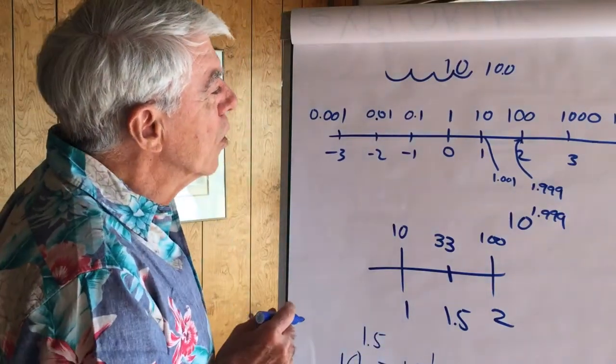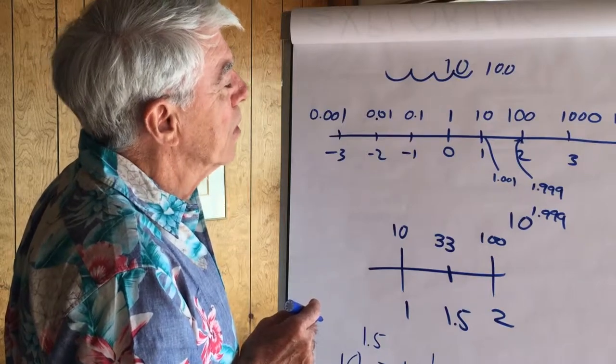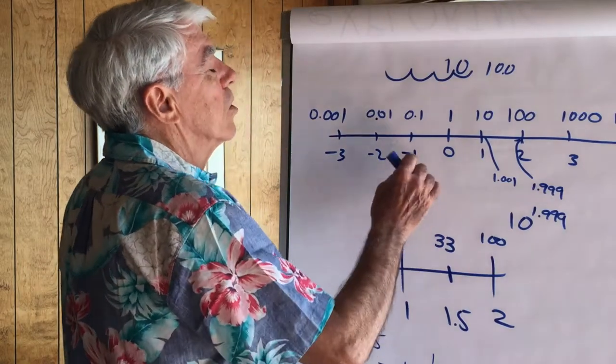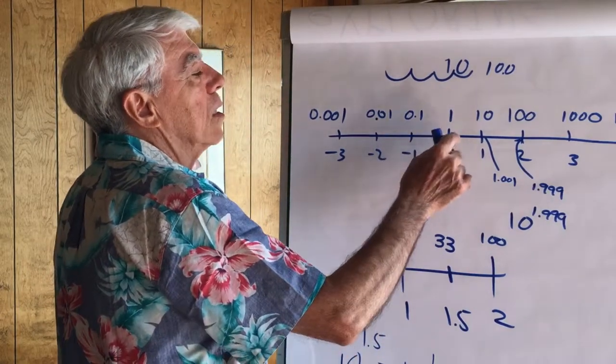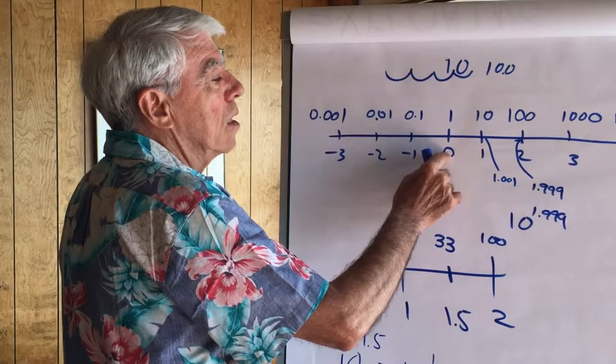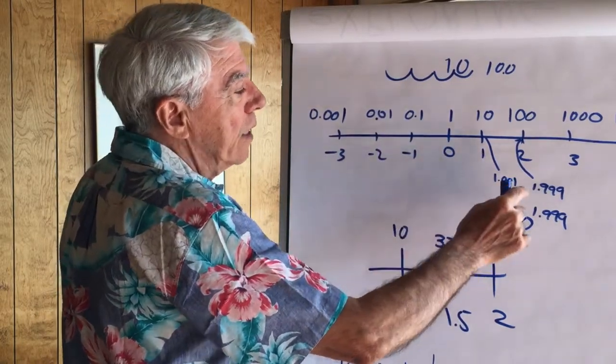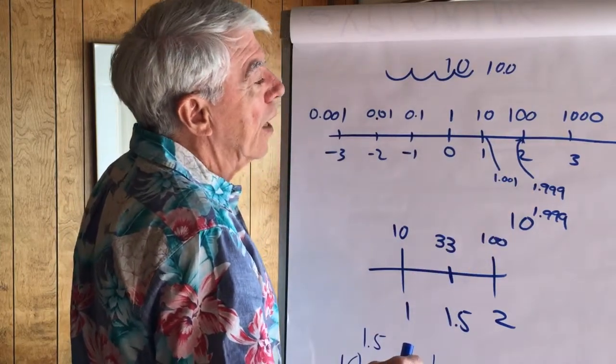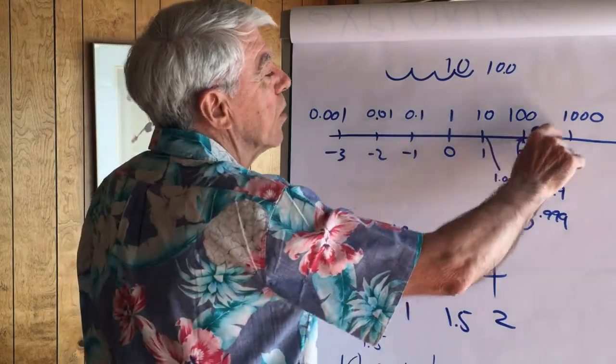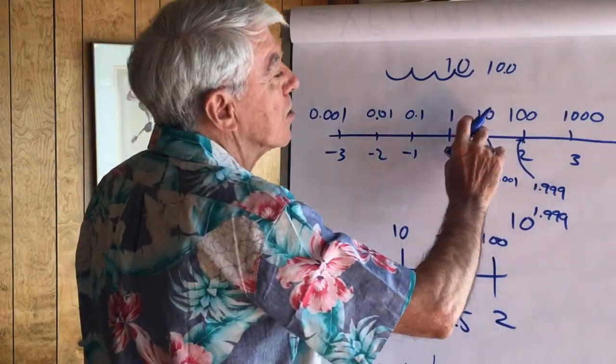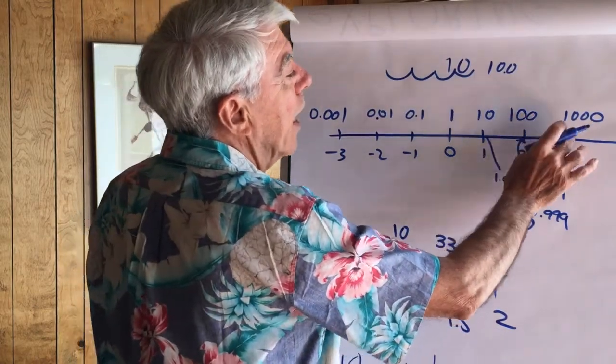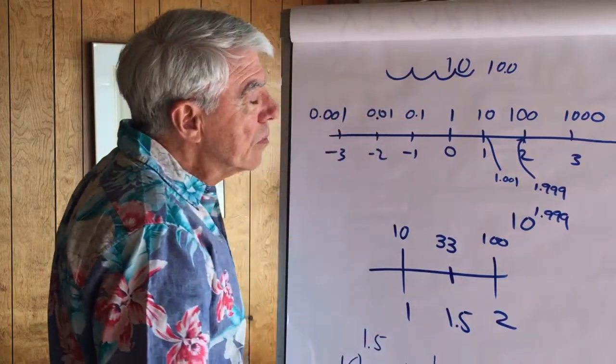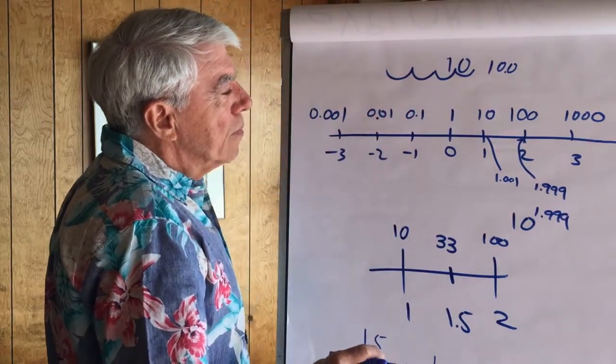Alright, well, the nice thing then about using the number line and putting exponents on it is that you can understand negative exponents, 0, 1, and fractional or decimal exponents. And you also get an appreciation of how they accelerate as they go up, from here to here 900 and from here to here 9,000. In fact...